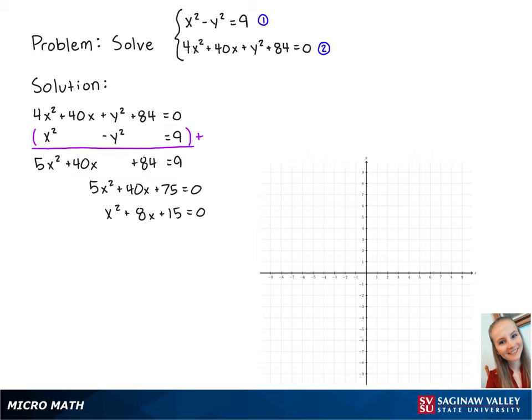Now we can factor the left side to be x plus 3 times x plus 5, which is equal to 0. Now we can see that x is equal to negative 3 or negative 5.